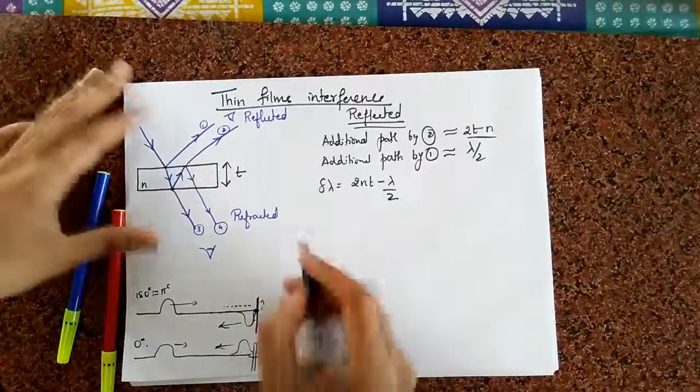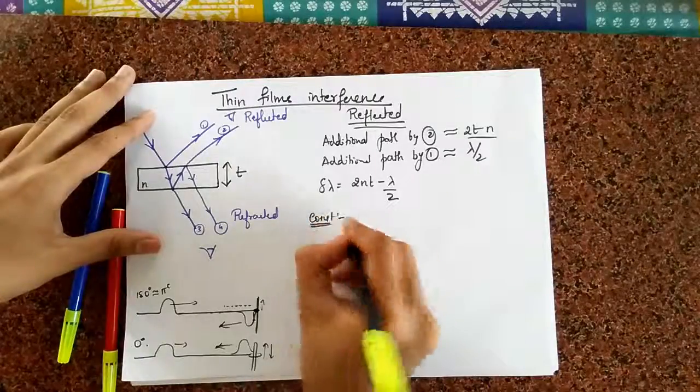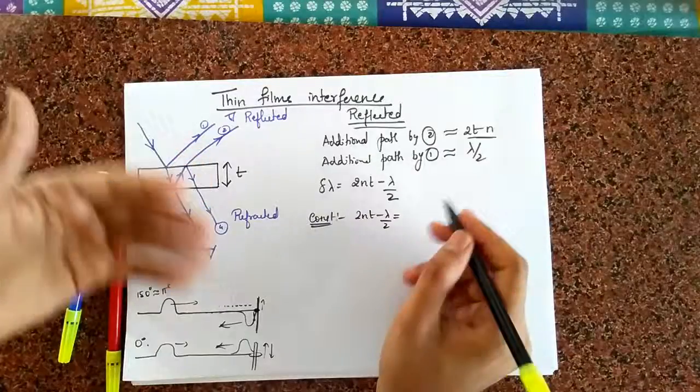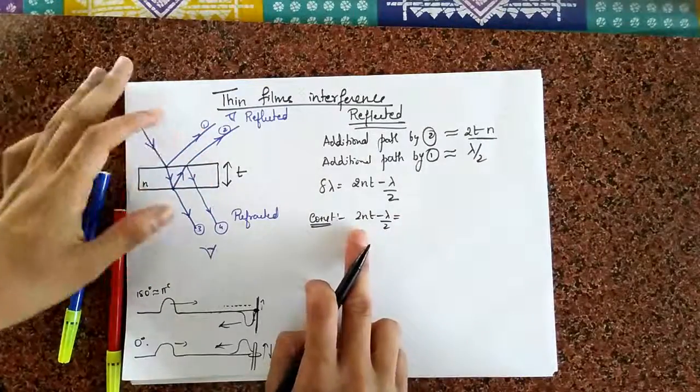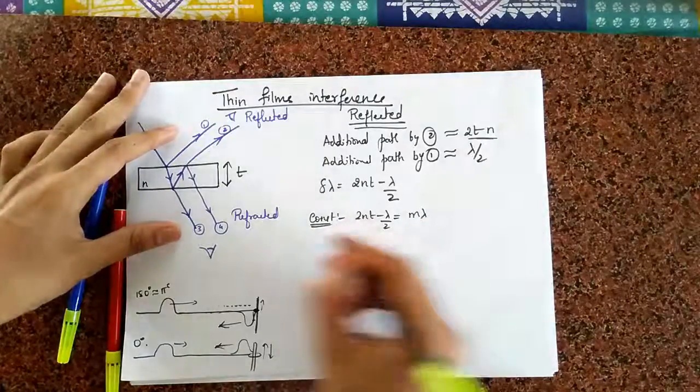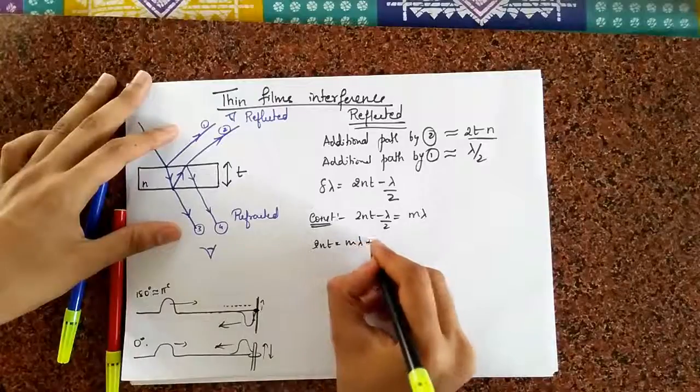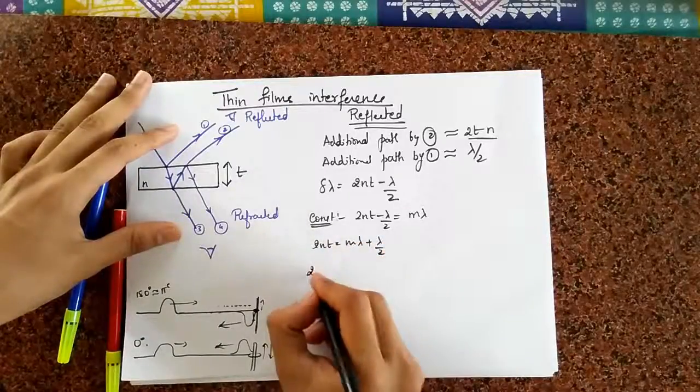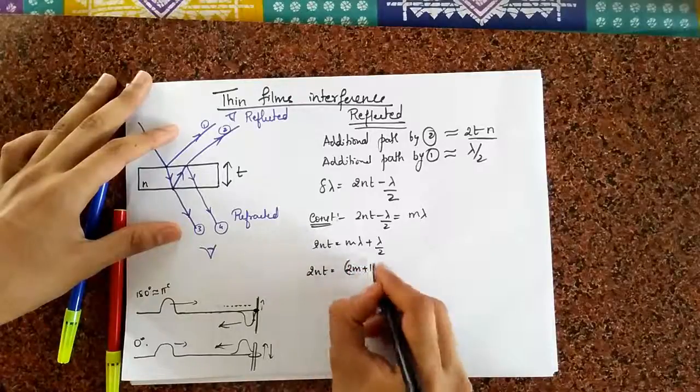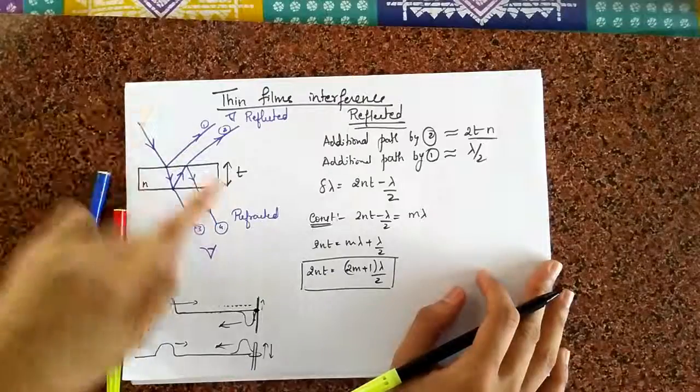And now, we can plug in what's going to happen for construction. Well, 2nT minus lambda by 2 has to be equal to an integral multiples of lambda. Now, since I've already used n for refractive index, I will call this as m lambda. So, the condition now becomes 2nT equals m lambda plus lambda by 2 or 2nT becomes 2m plus 1 lambda by 2. So, this is now the expression for construction in the refractive system.